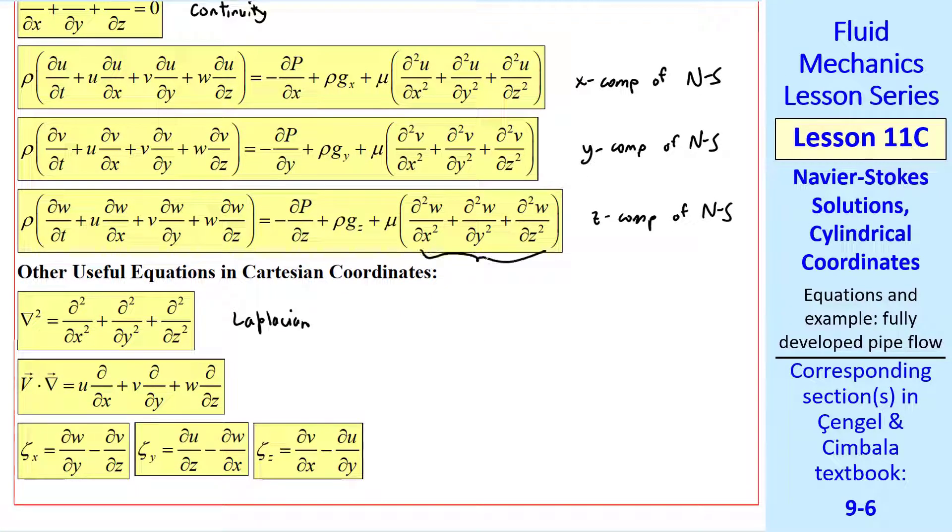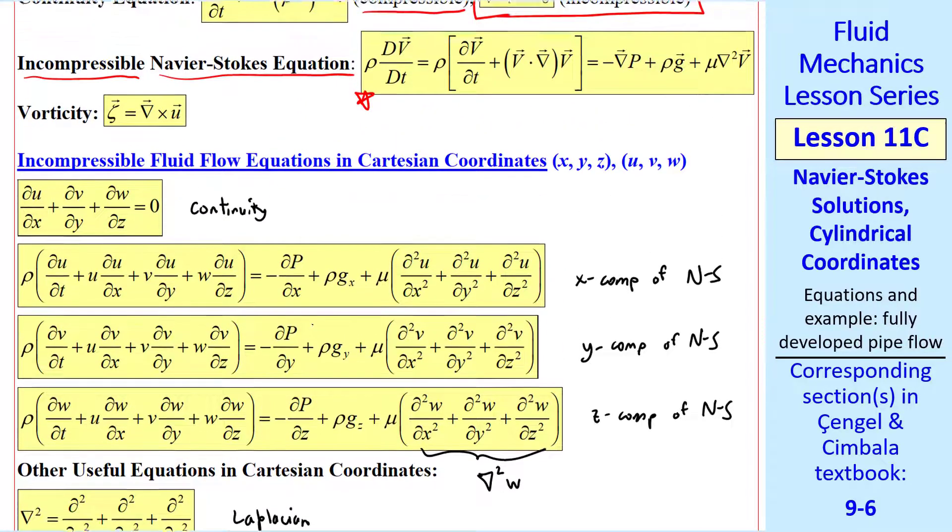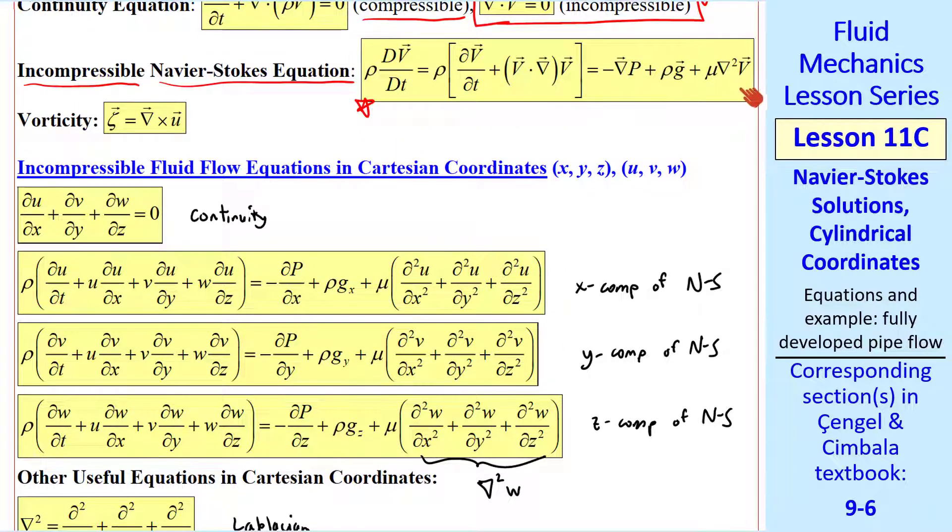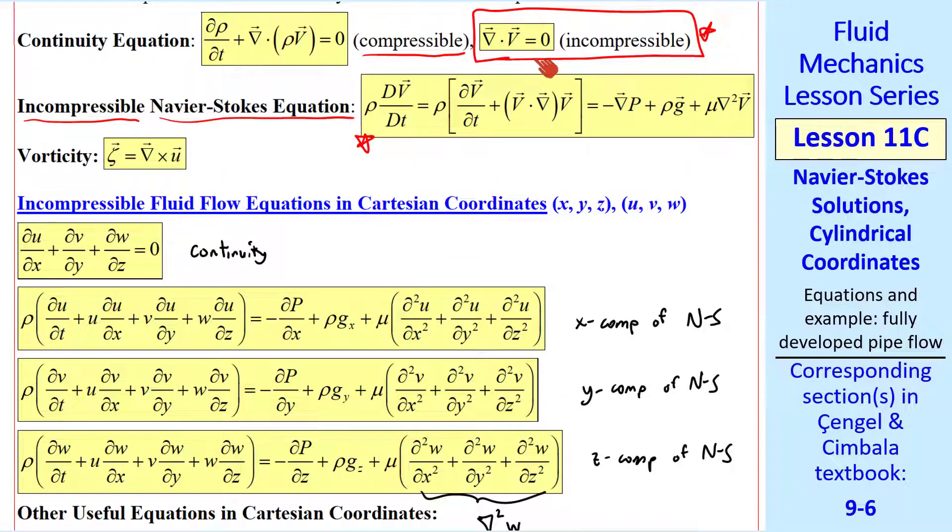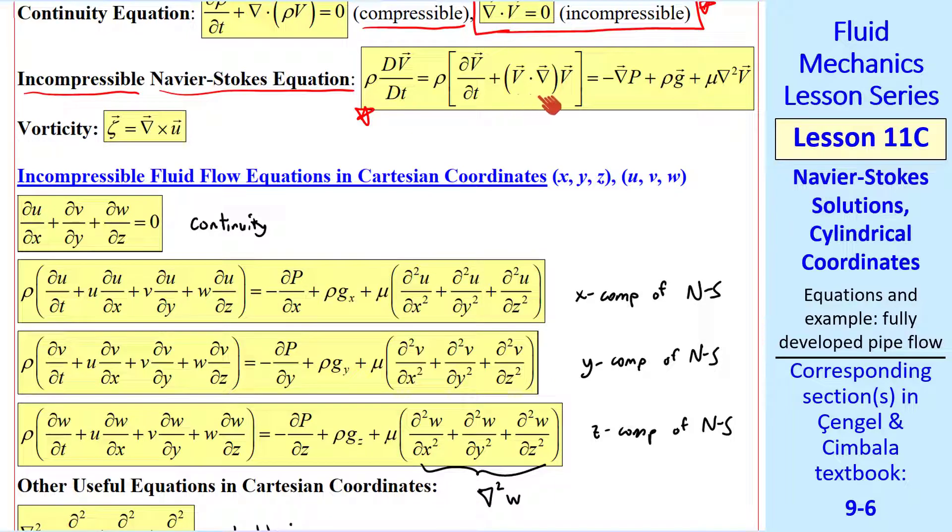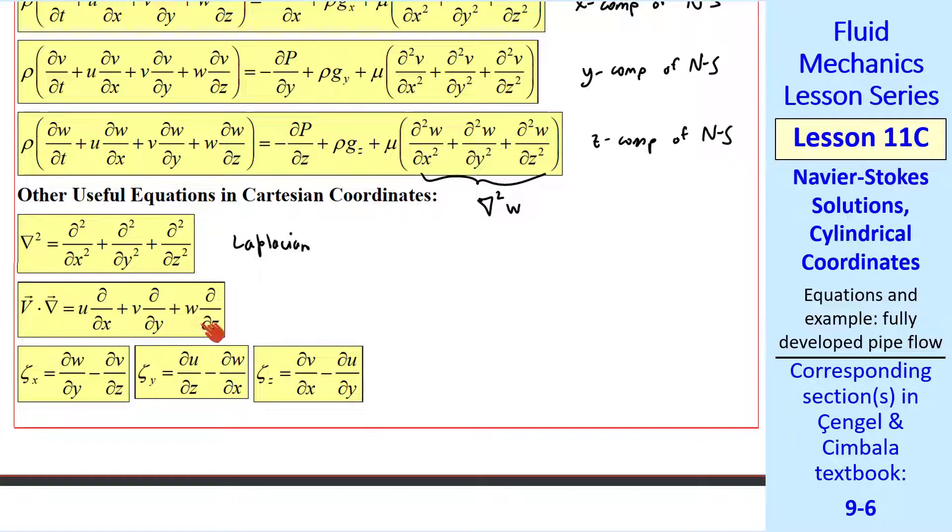Its vector form is given by this equation: zeta is del cross u. I summarize all the equations in Cartesian coordinates, again for incompressible flow. This is continuity. This is the x component of the Navier-Stokes equation, which is the linear momentum equation. Similarly, we have the y component and the z component.